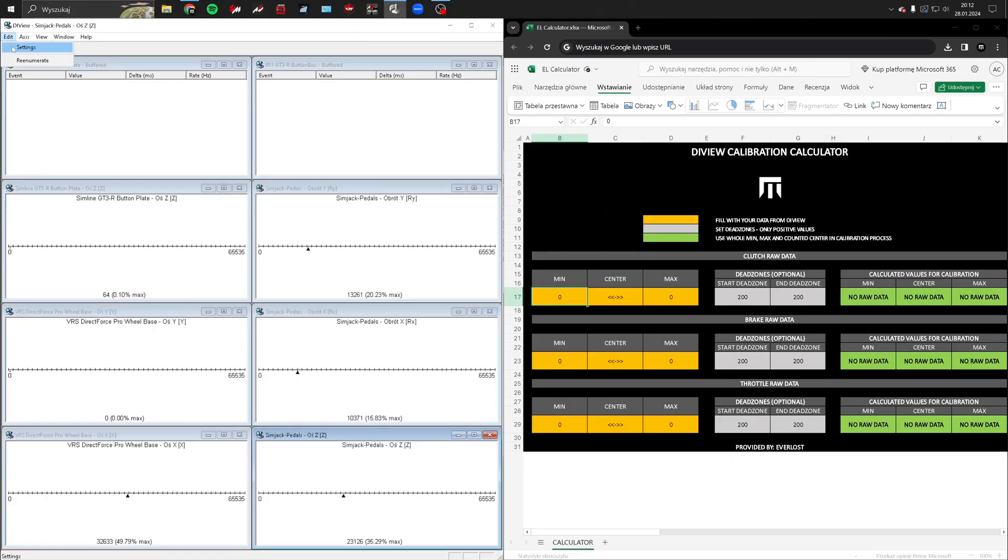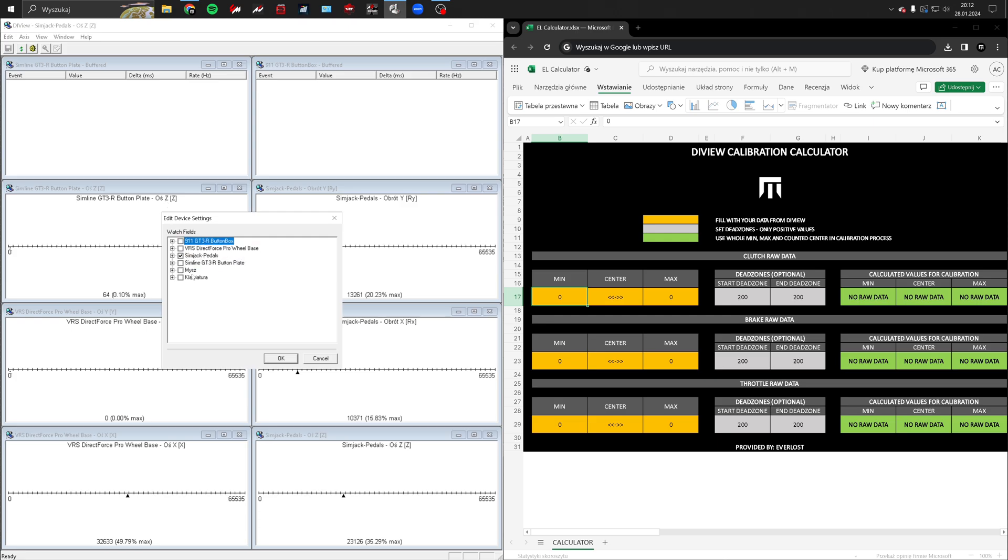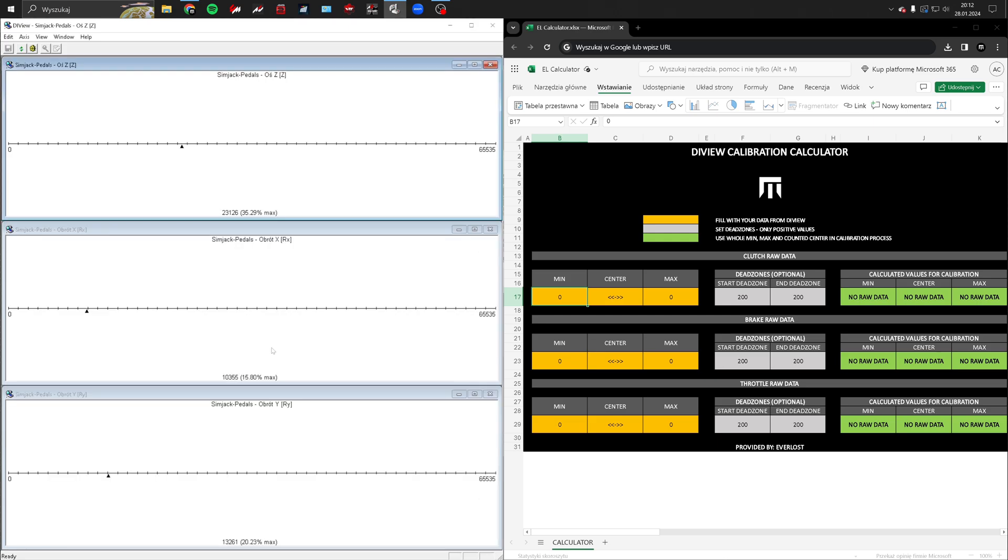In DI View, navigate to the settings. Hide all devices except SimJack Pro. Right click on each axis and select View Raw Data. Use the minimum and maximum values displayed in red for each axis in the provided Excel spreadsheet.